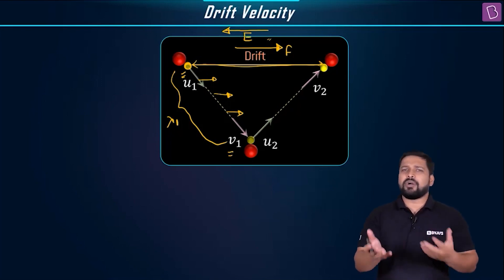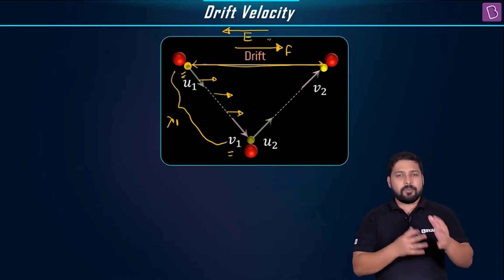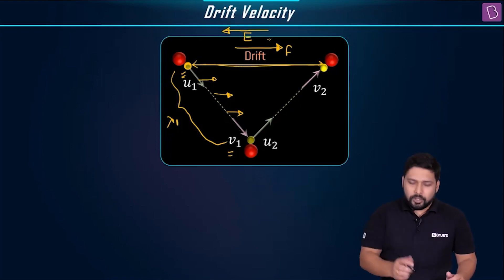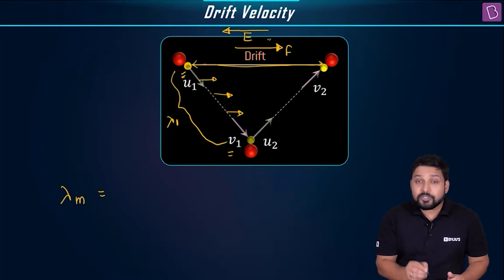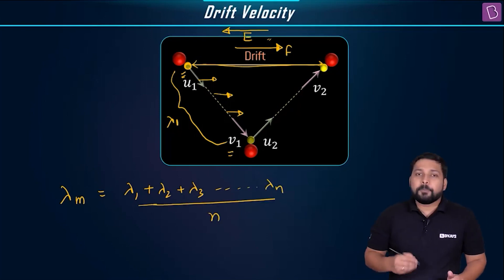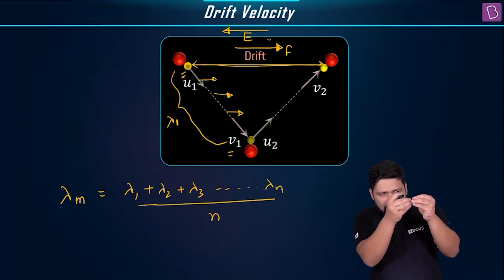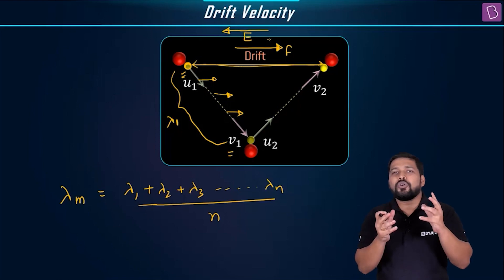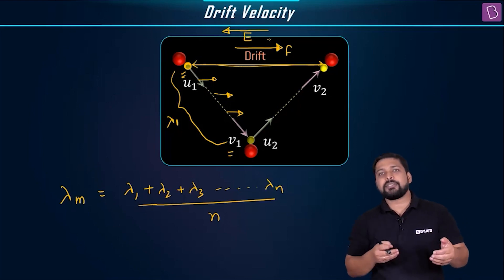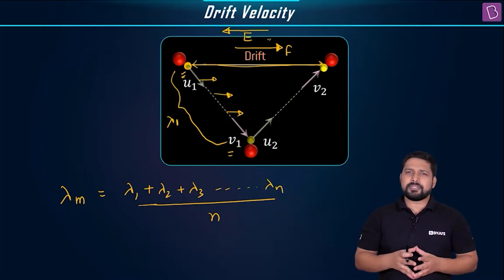Again, it is going to follow some other path — we call it lambda 2. For n number of particles there will be n number of paths. We can get the mean of all these paths: lambda mean, or the mean free path, is lambda 1 plus lambda 2 plus lambda 3 up to lambda n, divided by n. The distance traveled between two successive collisions is what we call the free path, and when you take the mean of all of this, you get the mean free path.